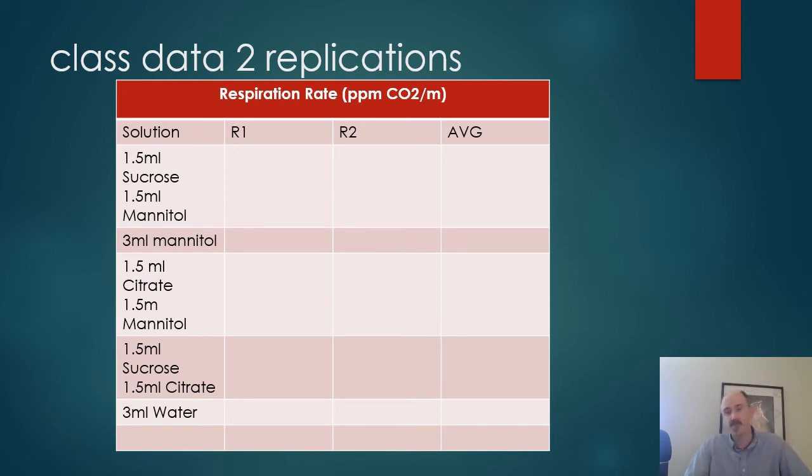Then we would give them straight up three mils of just mannitol to make sure that they're not really eating that. We have to check to see though, right? We would also give them 1.5 mils of citrate and 1.5 mils of mannitol. You'll want to think about what that might do. You would also give them 1.5 mils of sucrose and 1.5 mils of citrate to see what that might do. And lastly, our negative control, which is no food at all, nothing at all, just straight water, 3 mils of straight water. What do you think that would do?